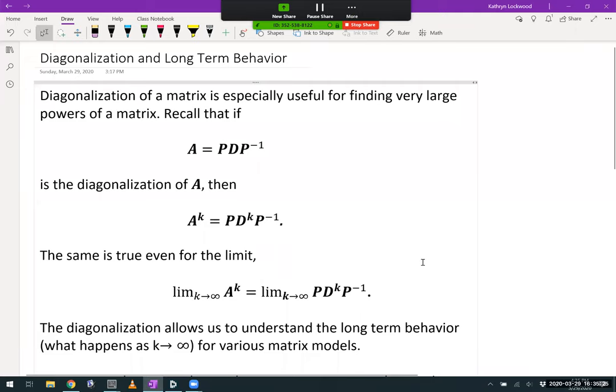In this video, I'm going to be looking at using diagonalization in order to interpret long-term behavior for population matrix models. Now, let's recall what it means to have the diagonalization for a matrix A. We can write it as a product of matrices P, D, and P inverse, where D is a diagonal matrix consisting of the eigenvalues of A, and P is a matrix whose columns are the eigenvectors.